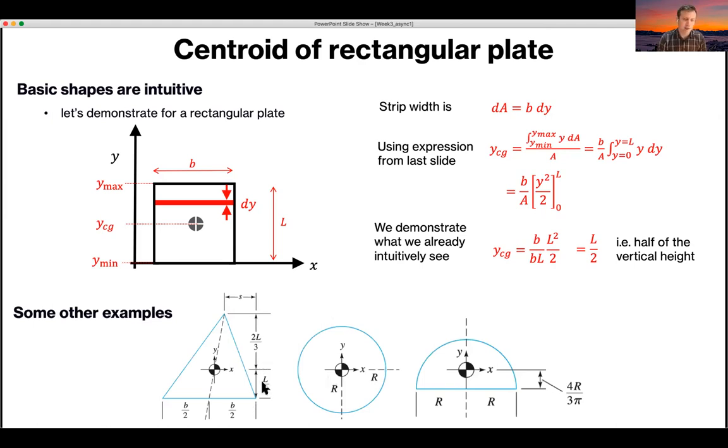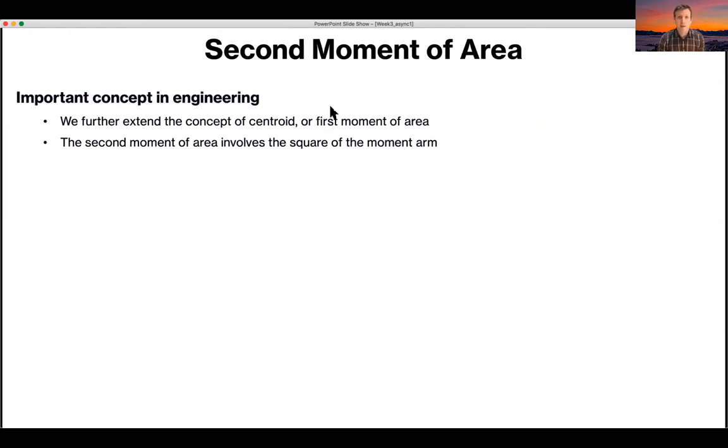There's some more general shapes that are given in the textbook: a triangle—note that it's not an isosceles triangle that has a slight skew to one side to make it a bit more interesting—a circle and a semicircle. And there's some standard definitions of where the centroid or center of gravity is in each case. Okay, so probably that's familiar to you, but the next step might not be. This is where we extend that concept from a first moment of area or a centroid to a second moment of area.